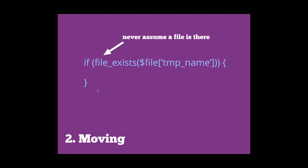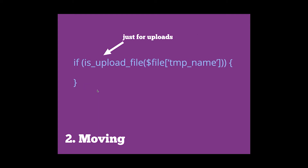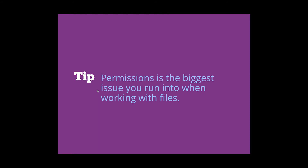Moving files around. First, you never assume that a file is where you think it is, so you always need to make sure that file is there. You do so by using the file_exists() method, then call the temp name on your file array. If you're uploading files, there's an is_uploaded_file() method to make sure that the file you're looking to communicate with is an actual upload file. Permissions is the biggest issue you run into when working with files. When you're on a typical Linux server, when you upload a file, that file gets uploaded as the Apache or PHP user. You need to make sure those users actually have permissions to move files around and access those files.